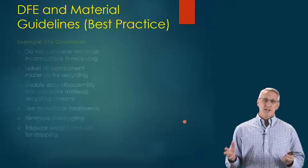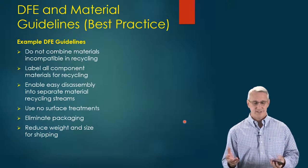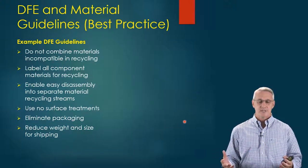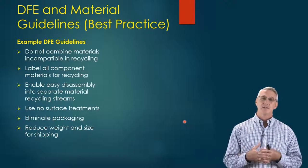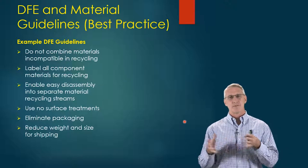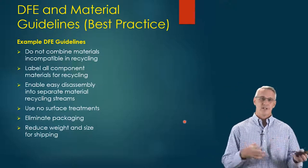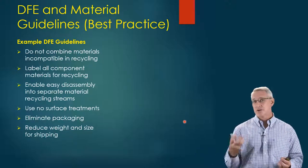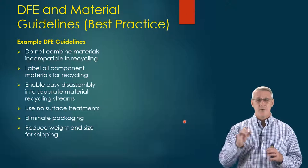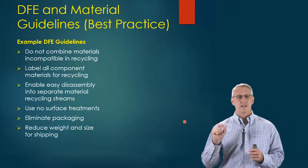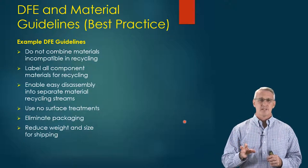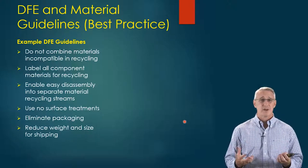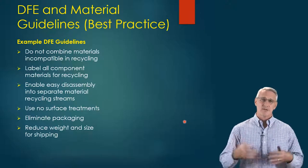So what are some of the guidelines and best practices? There's a lot, and there's a strengthening community growing around these principles. Some example guidelines: don't combine materials that are incompatible in recycling — that requires people with professional training to know if something is incompatible. Label all component materials for recycling and what type of recycling. You already see that in plastics — the little triangle with arrows and a number designating what type of recycling it can undergo. We need the same thing for all of our materials. Enable easy disassembly into separate materials for recycling streams. If you make something hard to disassemble, it's that much harder to get the recovery process into play.